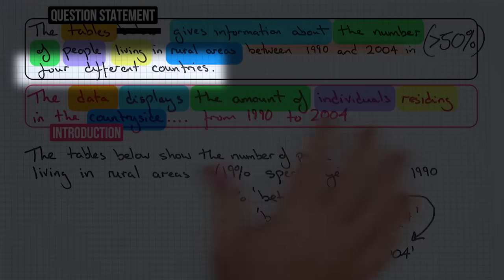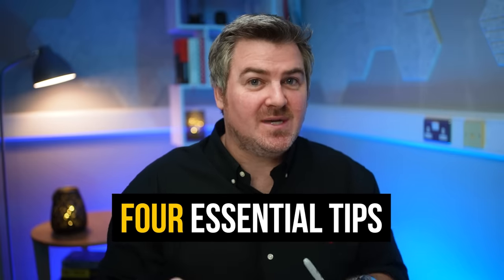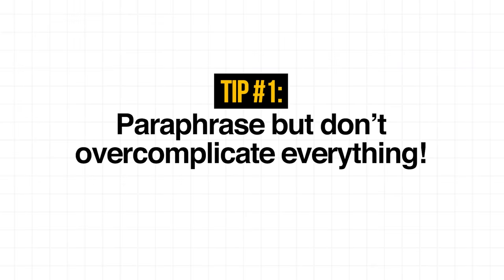And that is as much predicting as we can do. But you might be looking at this and thinking, 'it says in four different countries — how do we anticipate that?' Well, that brings me on to the four essential tips and the thing you should never do. Tip number one: paraphrase, but do not overcomplicate everything. Students struggle with paraphrasing not because it is difficult — I've just shown you how easy it is — but because they try to change every single word to something very complicated. Just keep it simple.